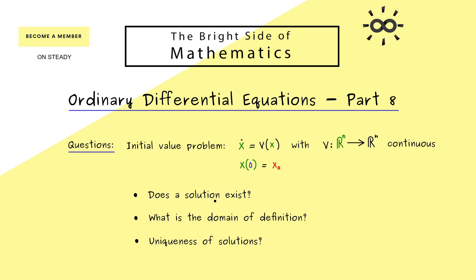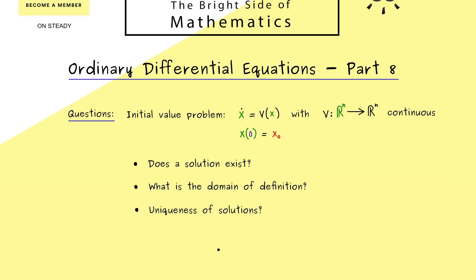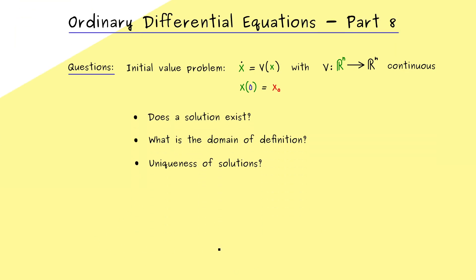And now you might already guess, if we asked about the existence of solutions, we should also ask about the uniqueness of solutions. In other words, can we find more than one solution for a given initial value problem? Now in this video here, we can answer the last two questions with some well-chosen examples. In other words, we will show that the domain of definition is not always R, and that the uniqueness of solutions is also not always given. So you could say we have some nice counter examples to answer these questions.